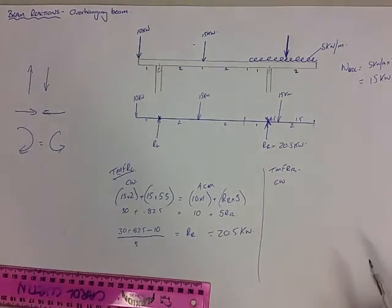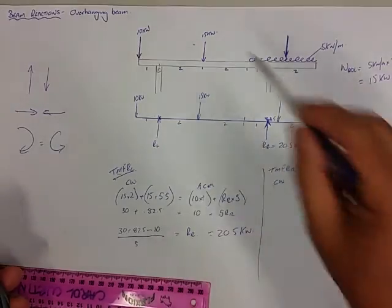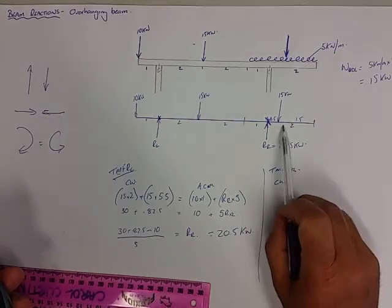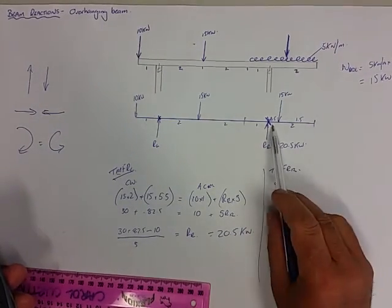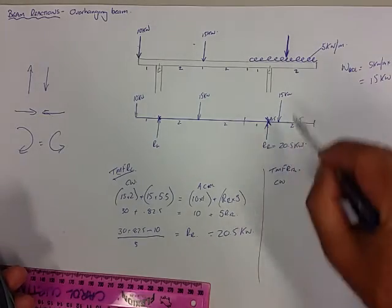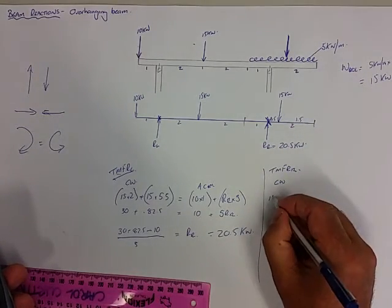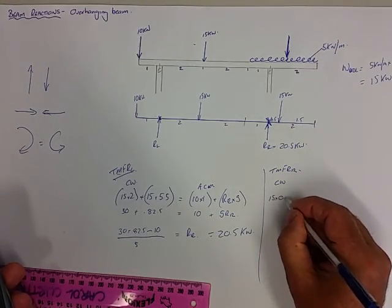So let's do the clockwise first. So what forces are going to cause the beam to turn clockwise? Well, the UDL, 15 times 0.5, it's the only one on the beam, it would cause a clockwise motion. So we've got 15 times 0.5.